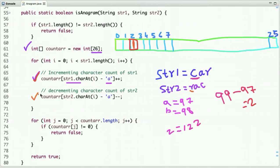Let's move to the next line. The first character of string 2 is 'r', and the ASCII code of 'r' is 114. If we subtract with the ASCII code of 'a', then it is 17. So at index 17, we need to decrement its value, so minus 1 is put here.